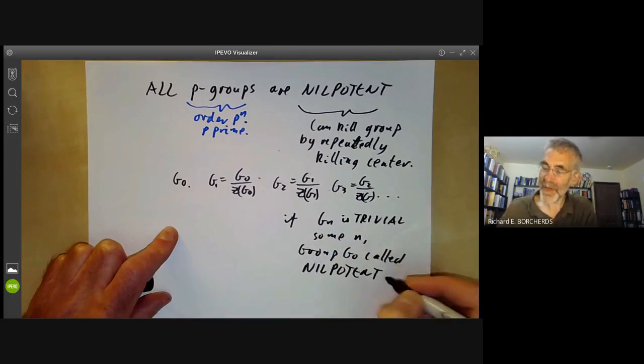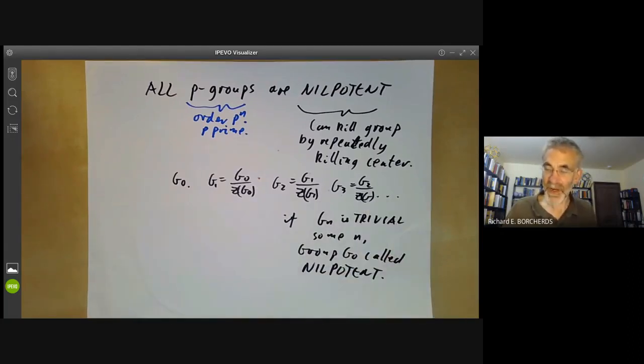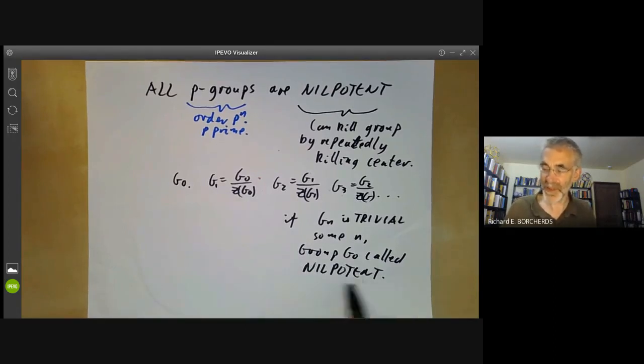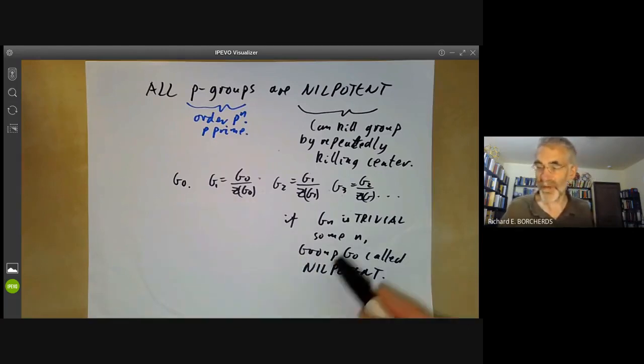The name nilpotent seems a bit odd, since there doesn't seem to be anything that's nilpotent anywhere in sight here. But it actually comes from the theory of Lie algebras. It turns out that for Lie groups, if the Lie algebra of the Lie group consists of nilpotent matrices, that means matrices such that some power is zero, then the Lie group is nilpotent. But the word nilpotent doesn't really fit very well with finite groups. We're sort of stuck with it.